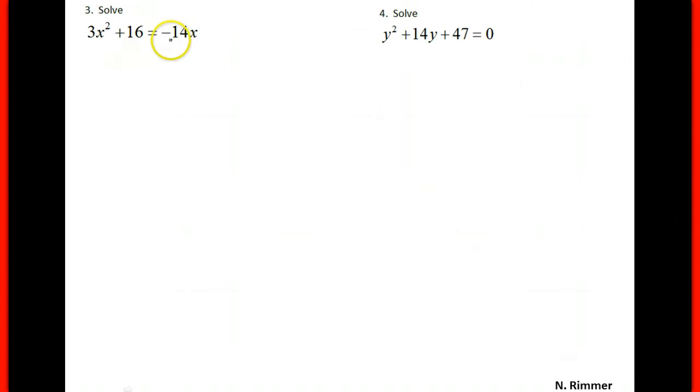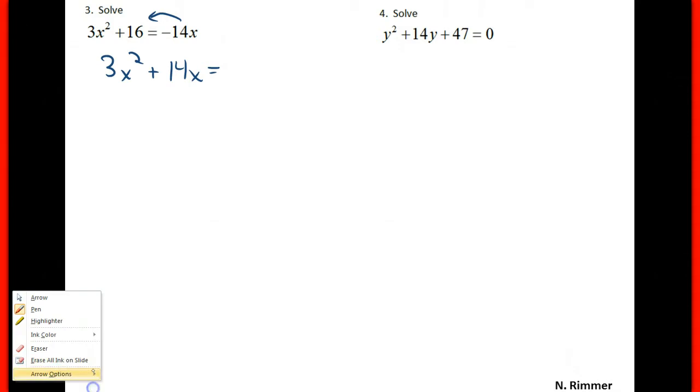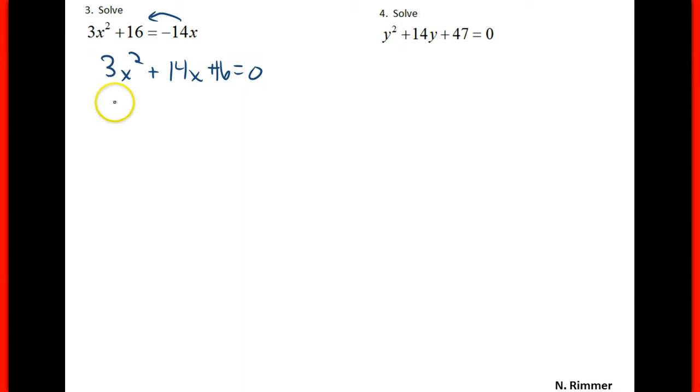And solve this quadratic equation by setting it equal to 0, adding 14x over to both sides. And we end up with 3x squared plus 14x plus 16 equals 0. And we have to factor.